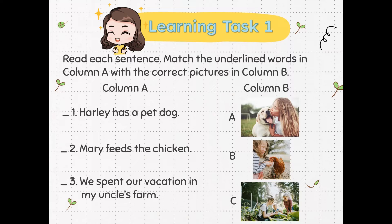Read each sentence, then match the underlined words in column A with the correct pictures in column B. Number 1: Harley has a pet dog. Number 2: Mary feeds the chicken. Number 3: We spent our vacation in my uncle's farm. Let's take a look at the answers.